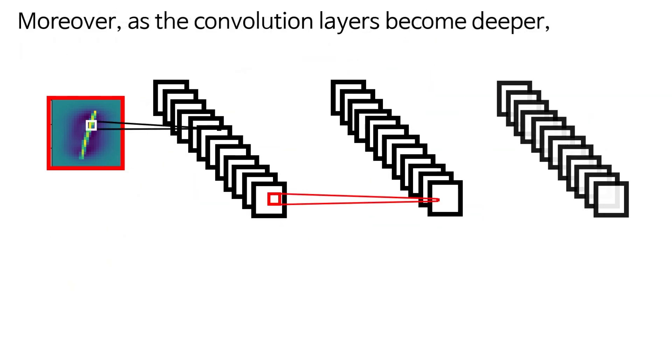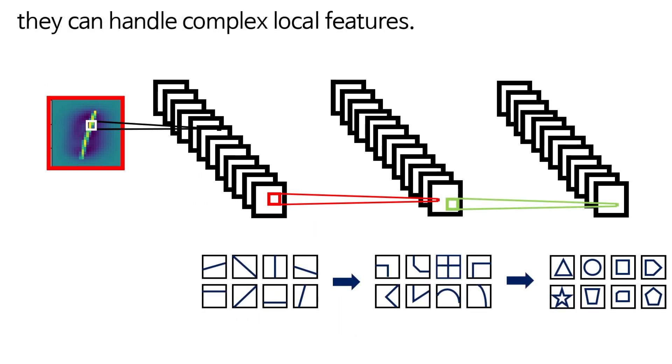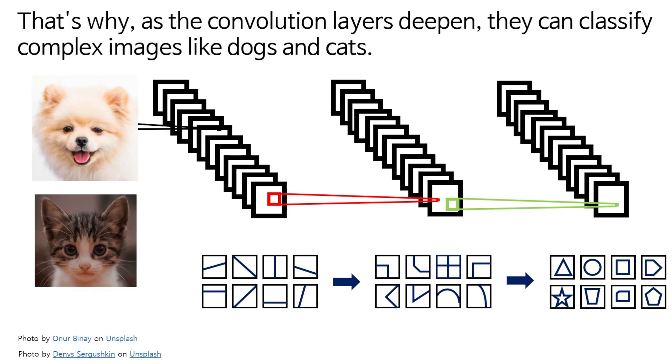Moreover, as the convolution layers become deeper, they can handle complex local features. That's why, as the convolution layers deepen, they can classify complex images like dogs and cats.